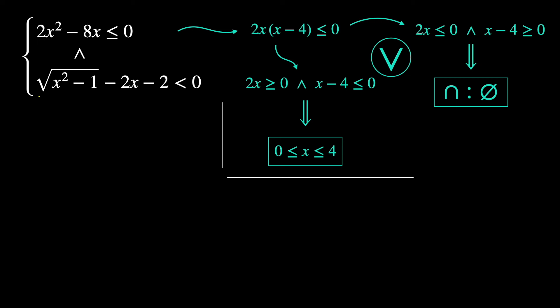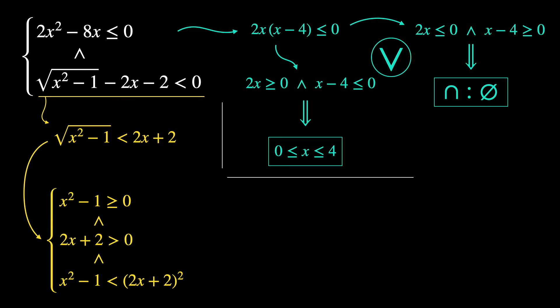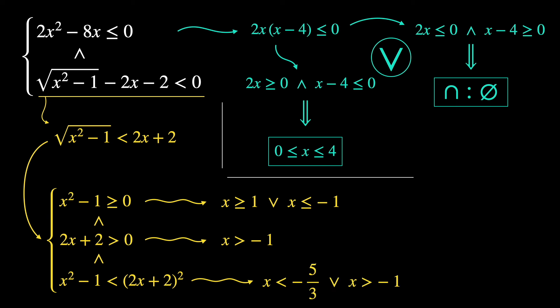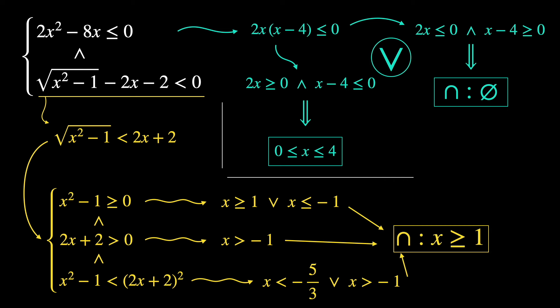Now the last inequality: √(x²−1) < 2x+2. For this to be satisfied, three things must hold: x²−1 ≥ 0, giving x ≥ 1 or x ≤ −1; 2x+2 > 0, giving x > −1; and x²−1 < (2x+2)², giving either x < −5/3 or x > −1. Performing their intersection, the result is x ≥ 1.